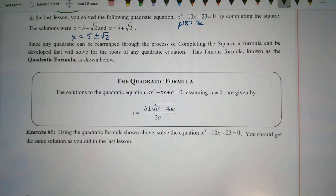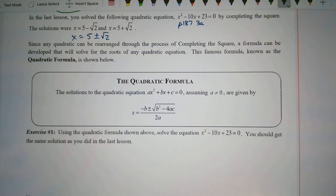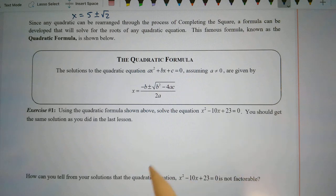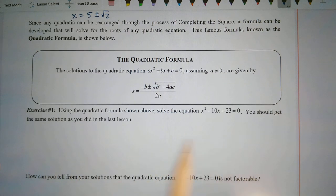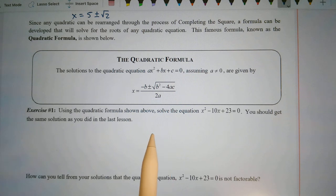There's a song for the quadratic formula you may have seen in algebra 1: x equals negative b plus or minus the square root of b squared minus 4ac all over 2a. Enough of my singing — using the quadratic formula, let's solve this.